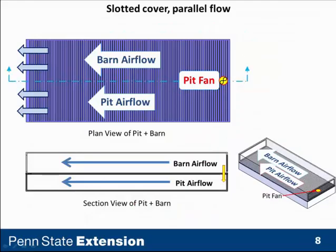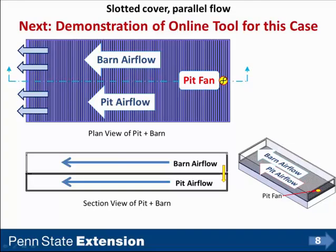This defines what we mean by parallel flow. If you look at the bottom center figure, it indicates that ventilation of the pit is accomplished by the yellow arrow with the pit fan bringing manure pit ventilation air in and directing the airflow to the left inside the pit, while at the same time the barn fans at the left end also direct air from right to left. This is a parallel flow configuration for tunnel ventilated barns above a slotted covered manure pit.